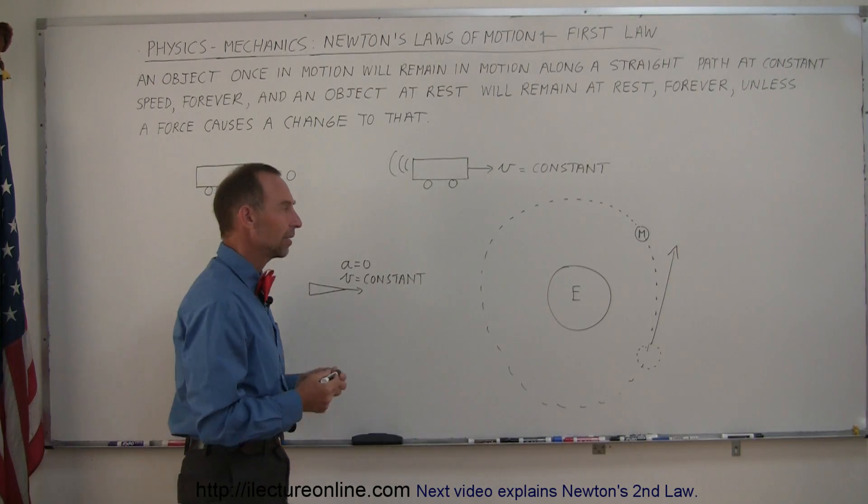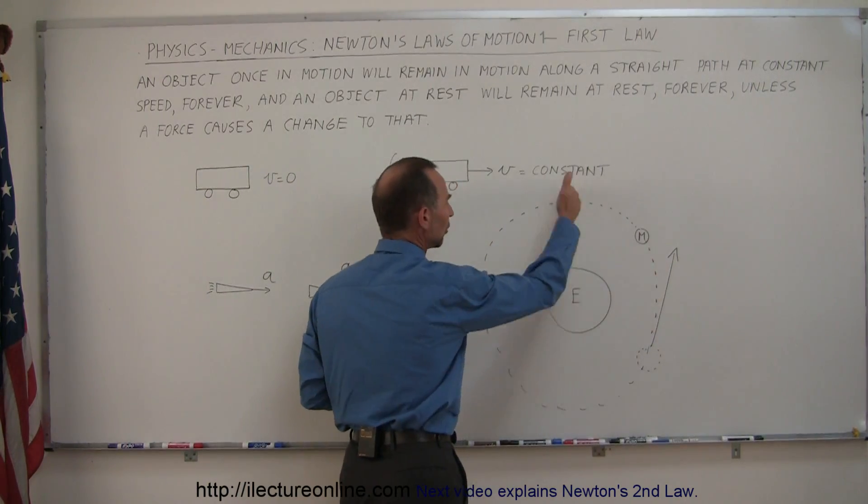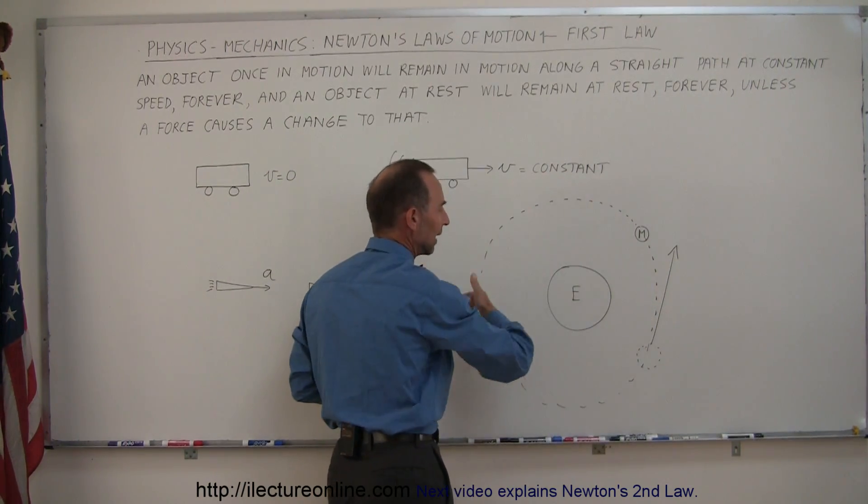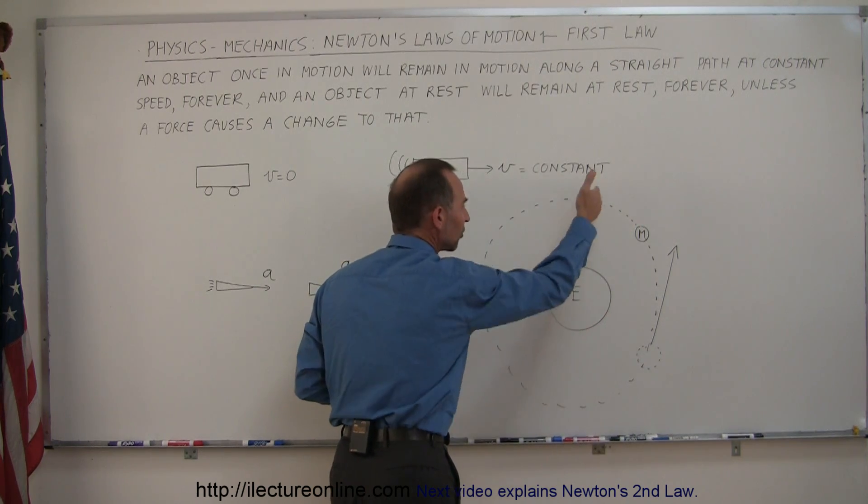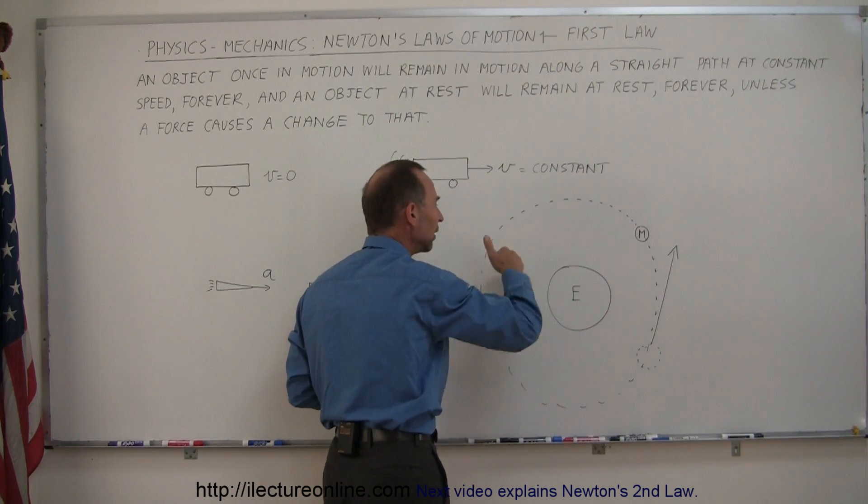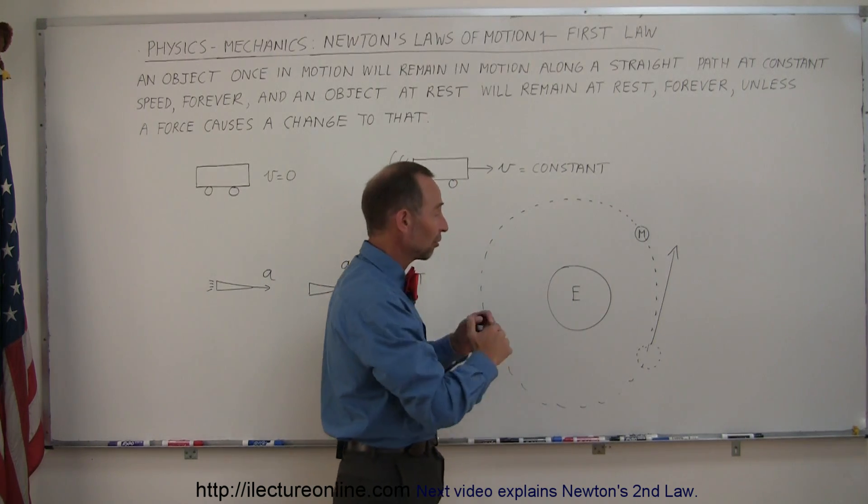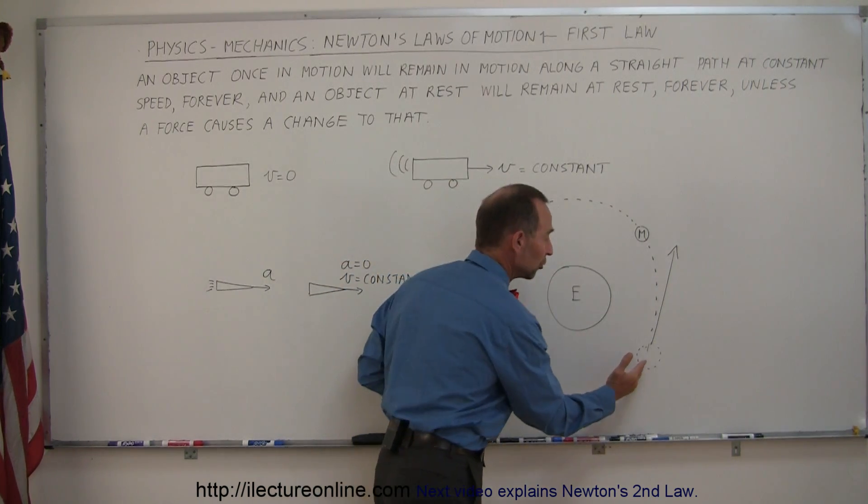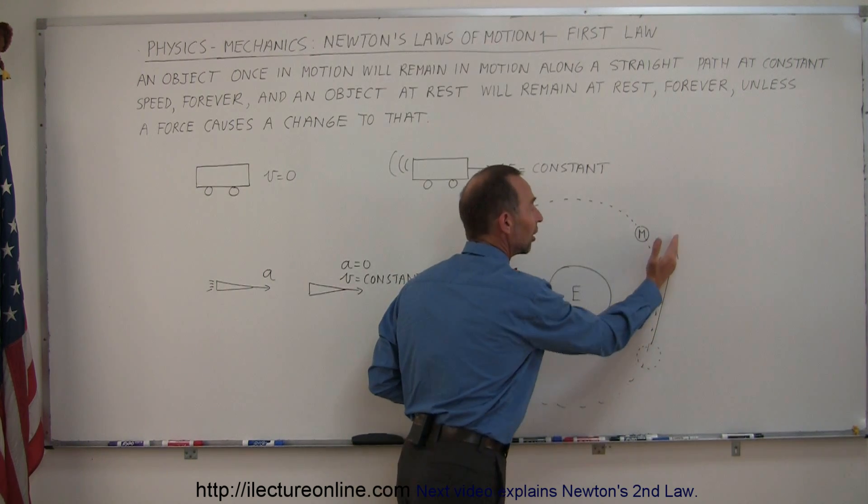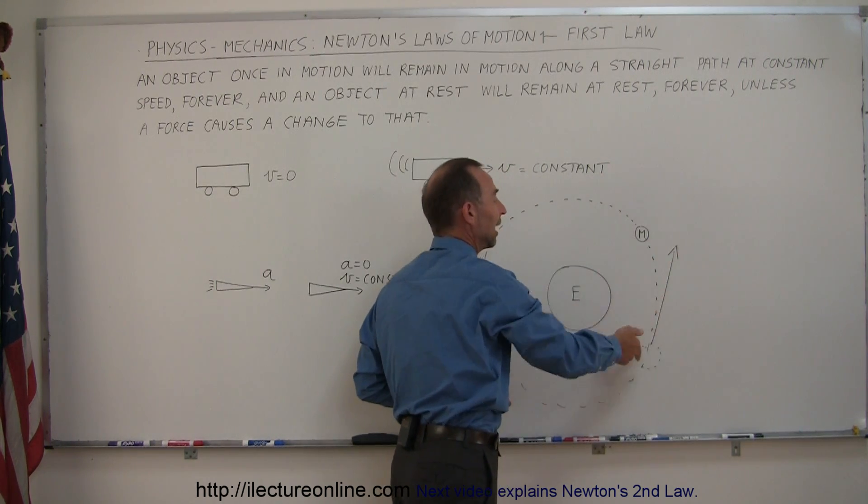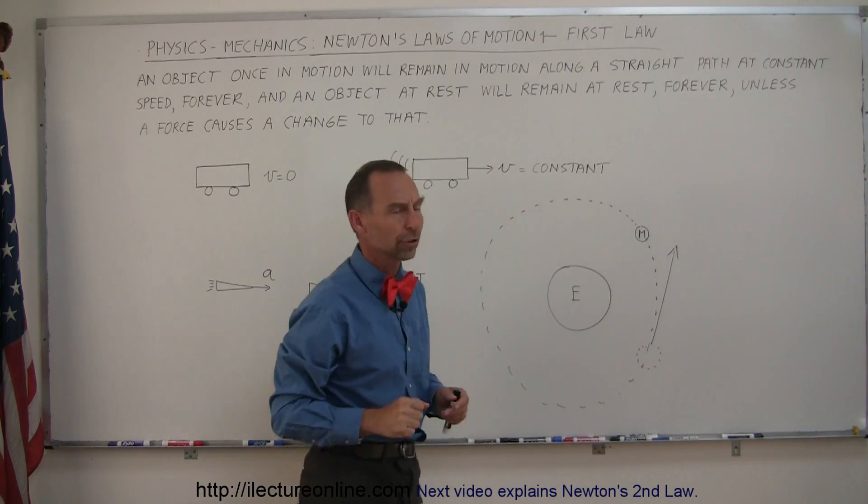Newton realized that the Moon circles the Earth because of constant gravitational force pulling it inward. He said if the gravitational force instantaneously stopped, the Moon would continue in a straight line path forever, and would no longer circle the Earth.